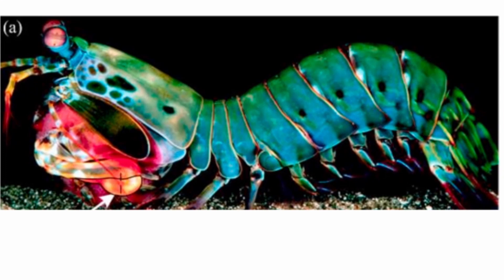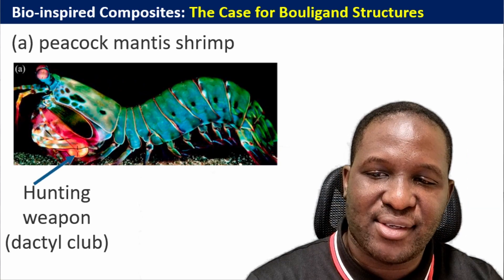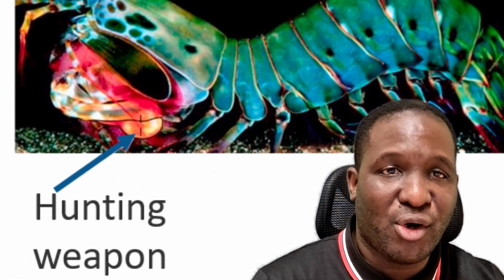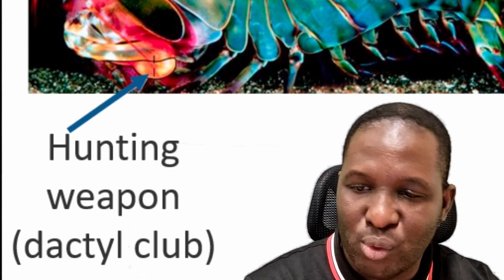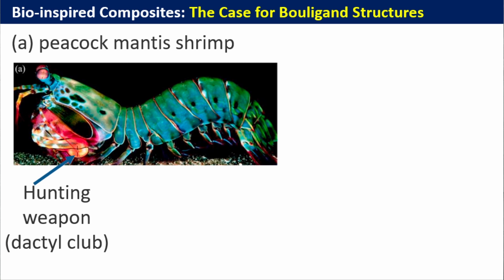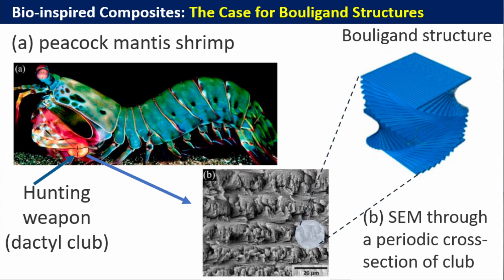Let's talk about our friend the mantis shrimp. This is a picture of what it looks like — it has something here which is its main hunting weapon called the dactyl club, a club it uses to strike prey. If you cut through the dactyl club, what you will see using an SEM is a periodic cross-section with an arrangement called the Bouligand structure. Let's watch a video of this mantis shrimp in action.